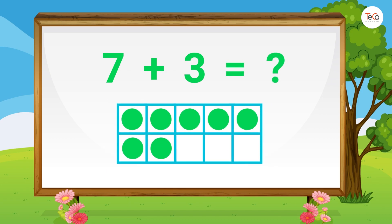And the last one... 7 plus 3 equals... Draw 7 dots then 3 dots. Look, our 10 frame is full, which shows number 10. So 7 plus 3 equals 10.